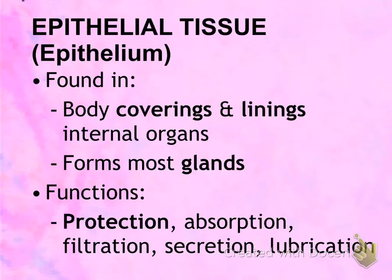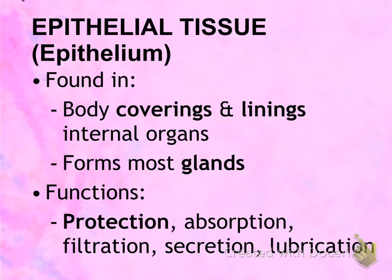Epithelial tissue, also called epithelium, is found covering and lining internal organs and forms the majority of tissue found in glands. Because they vary in appearance and location, they also have differences in function. The first function is protection — against physical abrasion or scratches, like the skin. Another function is absorption, meaning sucking something in, such as food being absorbed from the digestive tract into the bloodstream. Filtration means separating liquid from solid, or the bad from the good.